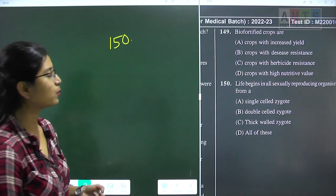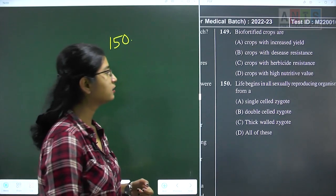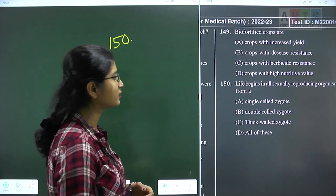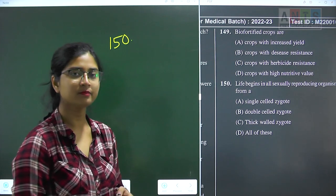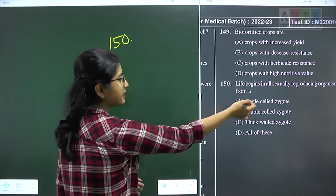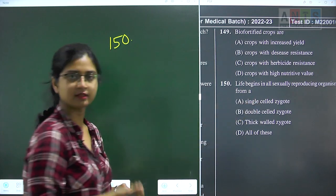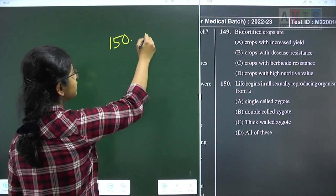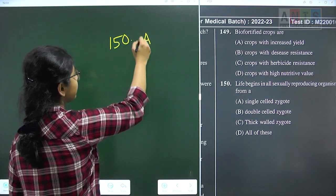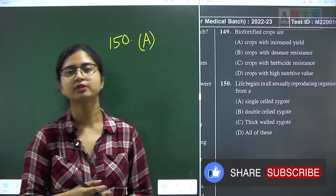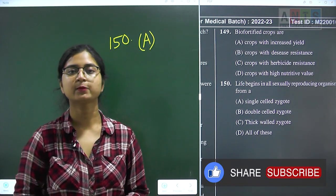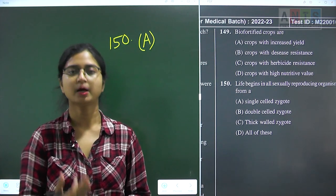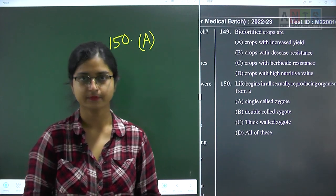Question 150: life begins in all sexually reproducing organisms from a single-celled zygote. This is a very easy and direct question. Question 150 answer is option A. I hope you understood the discussions regarding this paper. Good luck for your upcoming exams. Thank you.